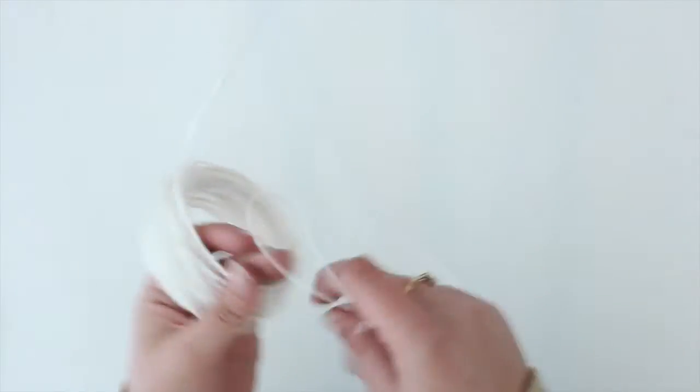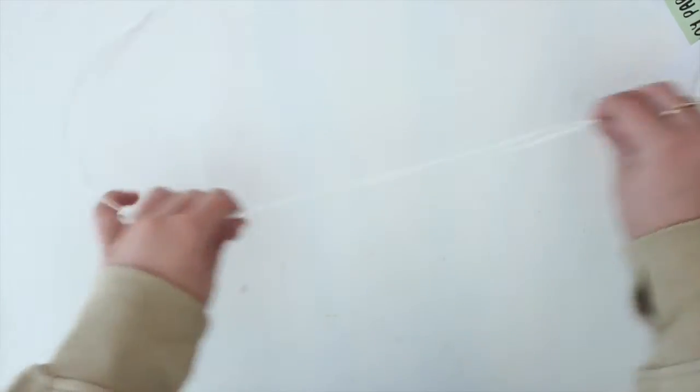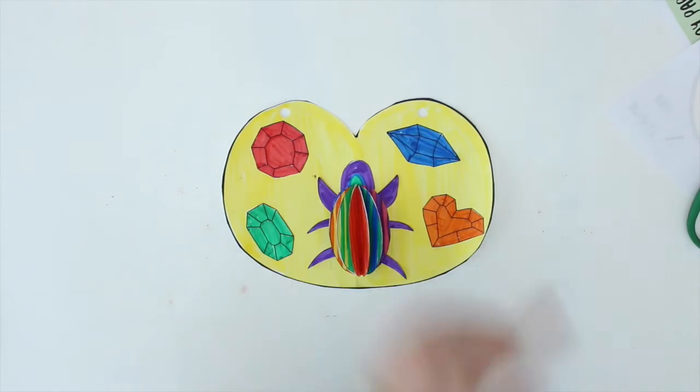For this last step, grab a piece of string and measure it out so that it hangs on your neck where you want your amulet to be. This string that I chose was a little bit too stiff. I'd recommend a more bendable string.